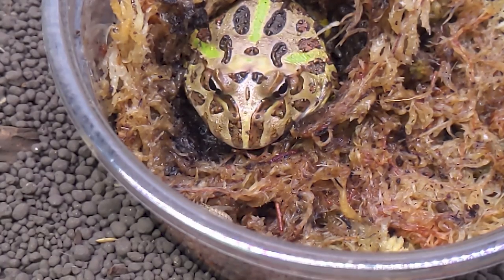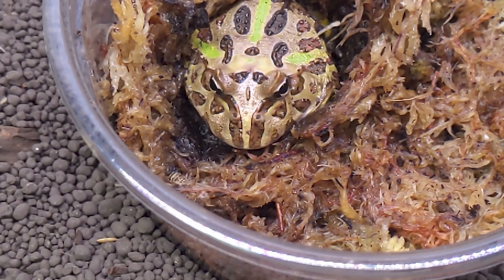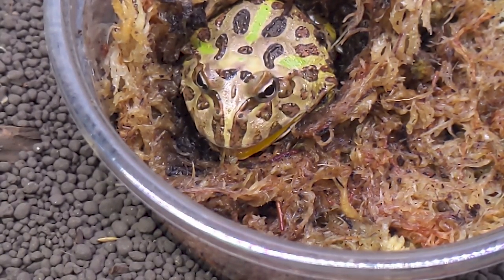And with frogs, you'll notice that the tongue is attached at the very front of their mouth. And they basically just flip it out and stuff sticks to it. And then they bring it back in. Victory. They can feed on land.